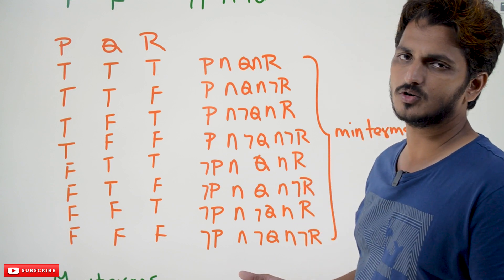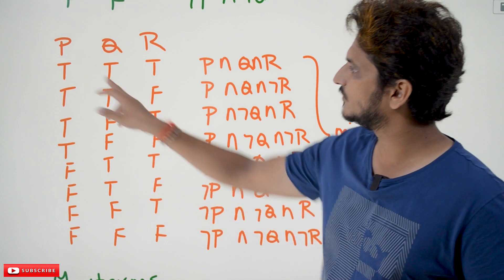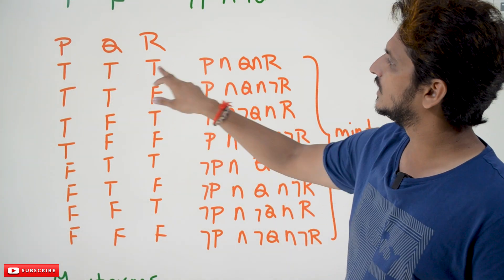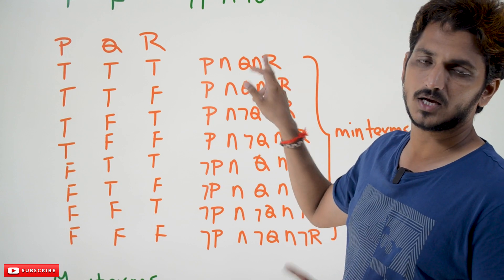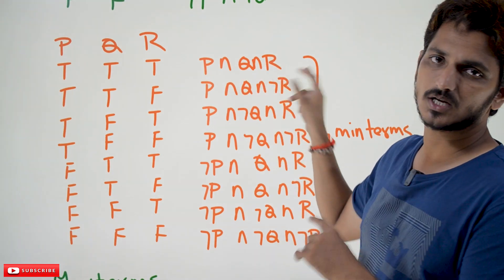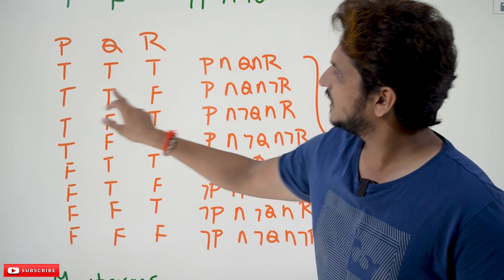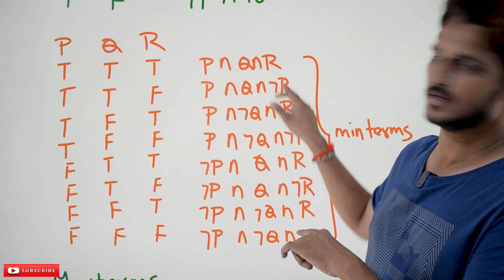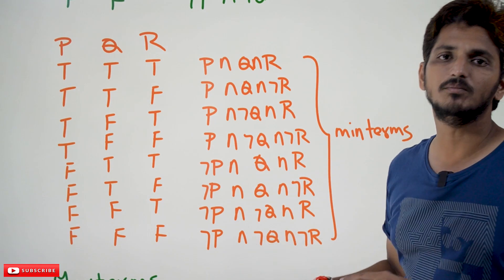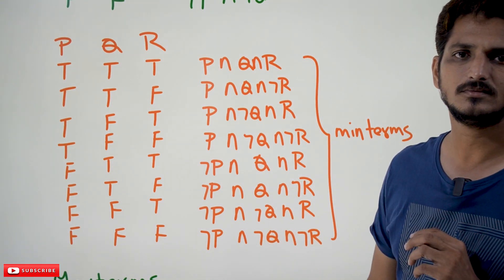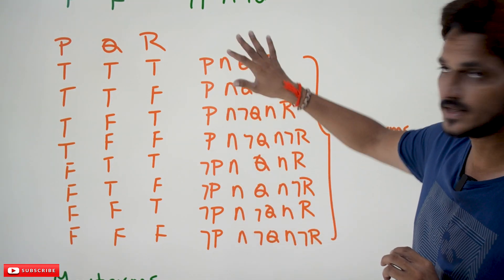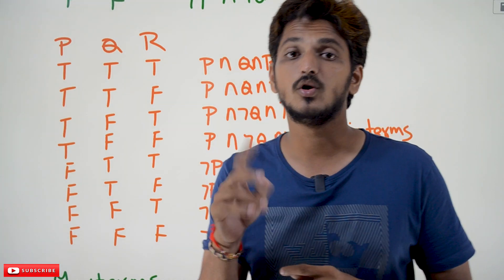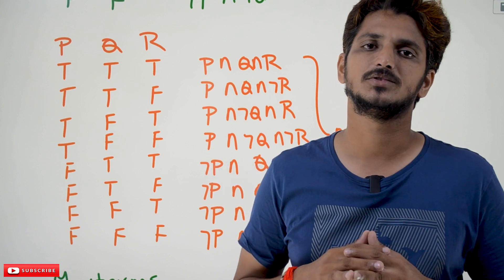Now the same rule you have to apply in order to write the Min Terms. If it is true, it means P. T means Q. T means R — P conjunction Q conjunction R. Then T T F: P conjunction Q conjunction negation R. Like that you have to write all eight Min Terms. These are all we call Min Terms. If you are having four variables, you are going to get 16 Min Terms.